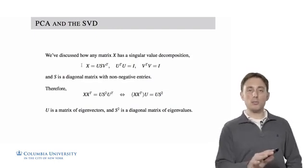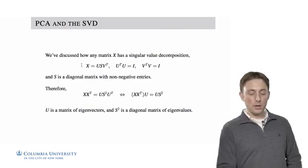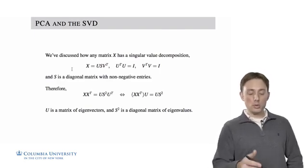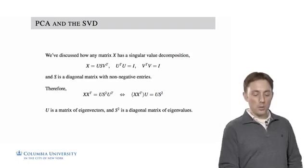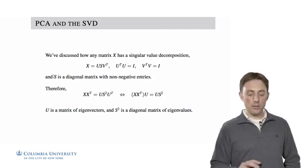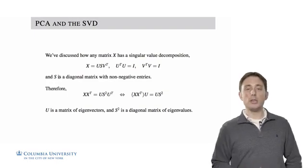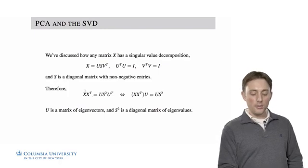Here I'm assuming X has more columns than rows. If it had more rows than columns, then some of these transposes would be switched. Also, the matrix S is a diagonal matrix, so all the values in it are zero except for along the diagonal, and all the values in S are non-negative along the diagonal.